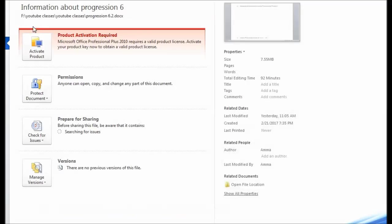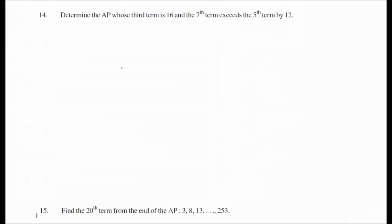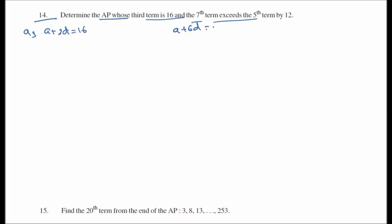Question 14: Determine the AP whose third term is 16 and the 7th term exceeds the 5th term by 12. Third term: a plus 2d equals 16. Seventh term: a plus 6d. Fifth term: a plus 4d.